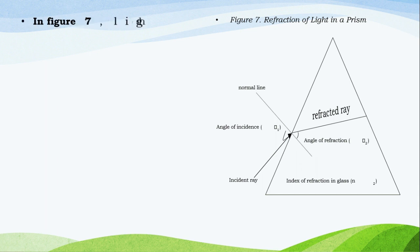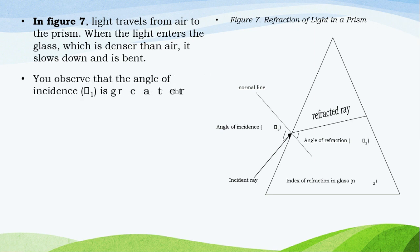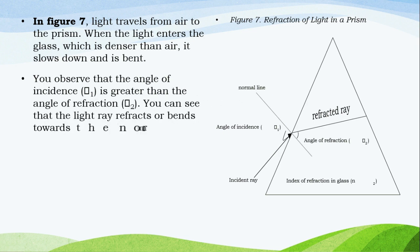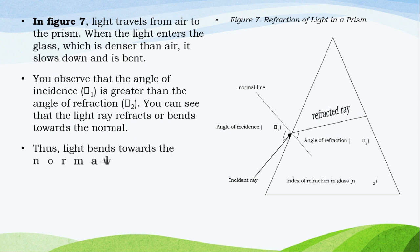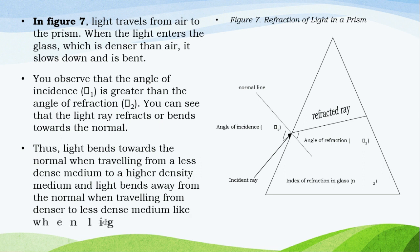Figure 7: Refraction of Light in a Prism. In Figure 7, light travels from air to the prism. When the light enters the glass, which is denser than air, it slows down and it is bent. You observe that the angle of incidence is greater than the angle of refraction. You can see that the light ray refracts or bends towards the normal. Thus, light bends towards the normal when traveling from a less dense medium to a higher density medium, and light bends away from the normal when traveling from a denser to a less dense medium, like when light rays leave the prism.